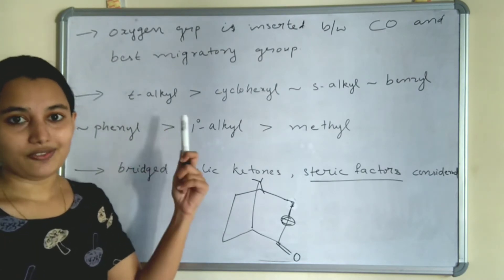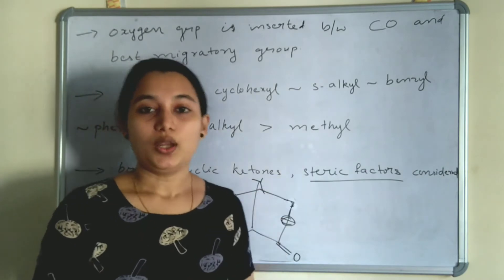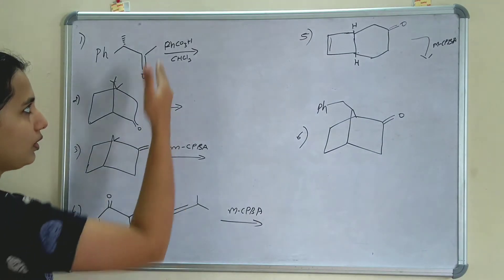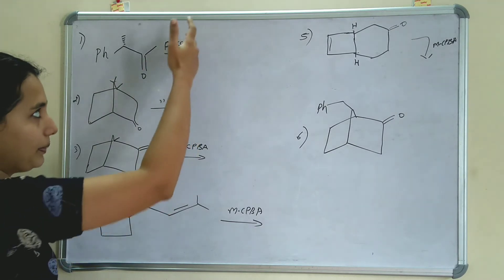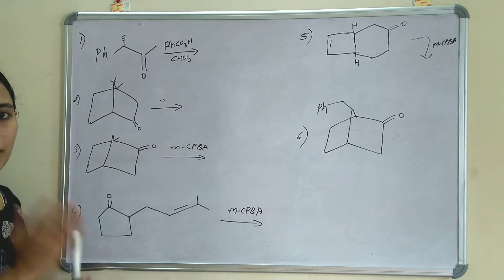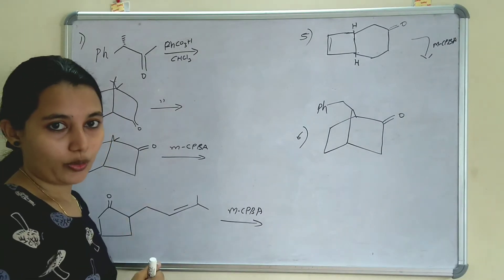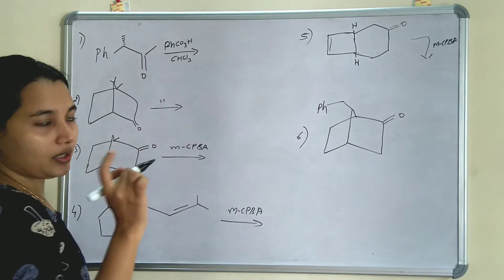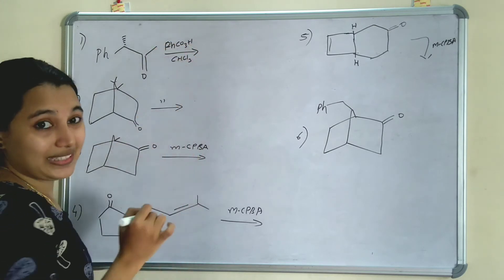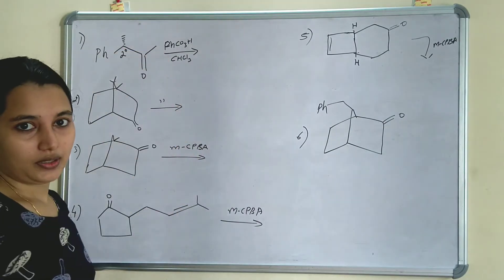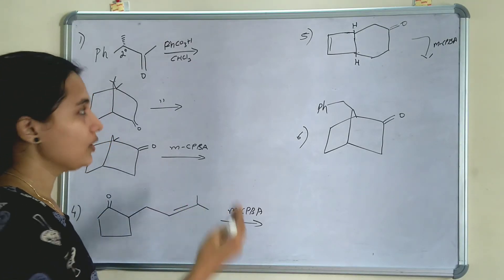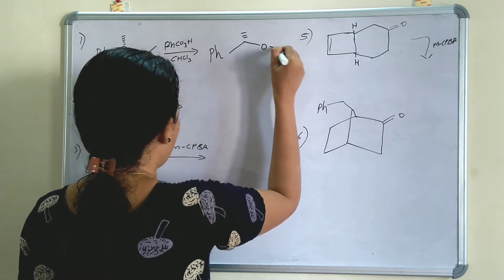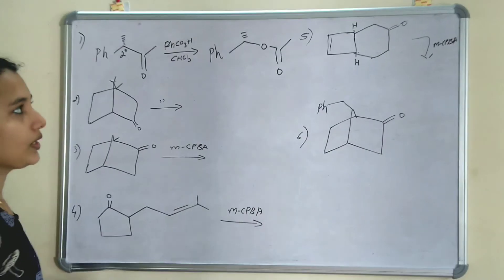The migratory order is highest for tertiary alkyl and least for the methyl group. Now we can solve some problems. In the first problem, a ketone is present. The conditions are THCO₃H and CHCl₃ — a peracid and a solvent — and a ketone is there, so we can apply Baeyer-Villiger Oxidation. One group is CH₃ (methyl group) and the other is a secondary carbon. Secondary alkyl group has more preference than methyl group, so we insert oxygen between the secondary group and the carbonyl group. This is the product.